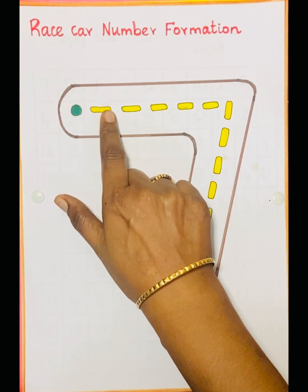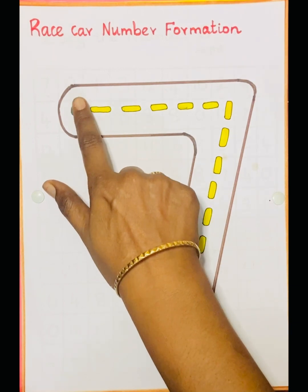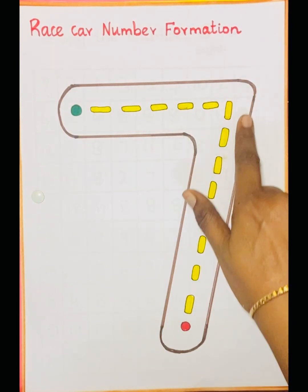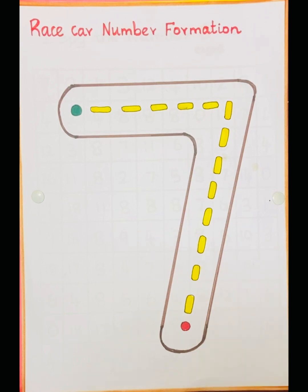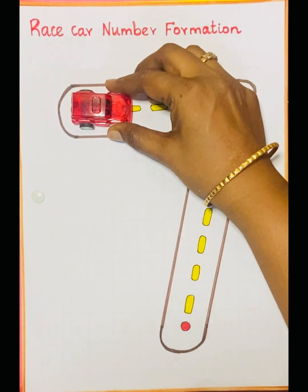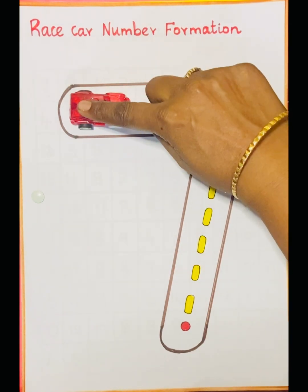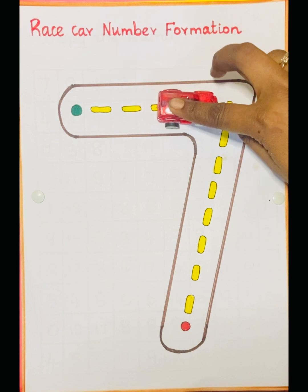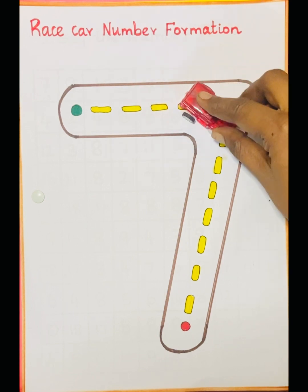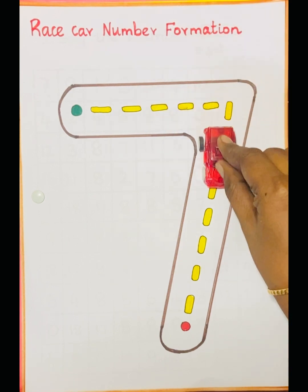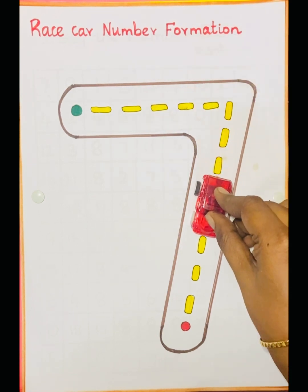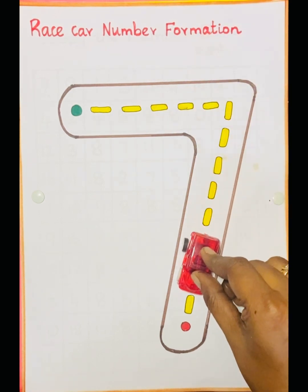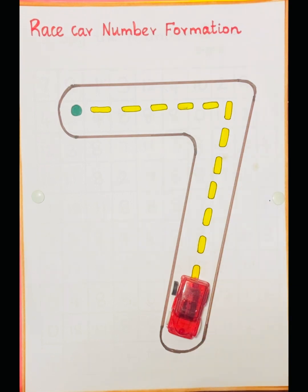Number 6 race car — number formation. See the color green; from green it will start. See the number 7 — the car will start in green and stop in red color.